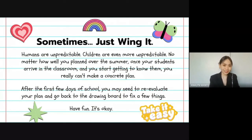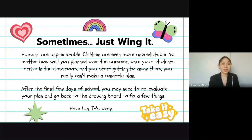Sometimes, just wing it. No matter how well you planned over the summer, once the children arrive in the classroom and you start getting to know them, you really can't make a fully concrete plan. Take a little time to get to know your students. After the first few days of school, you may need to re-evaluate your plan and fix a few things. Winging it in the classroom is a method some teachers use — whether due to lack of time or to let students dictate the class. It's necessary to have a plan, but striking a balance is the key.